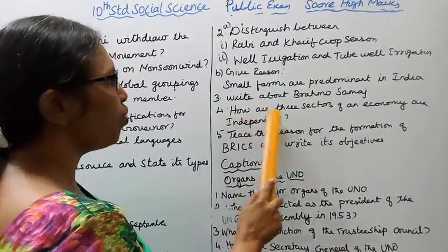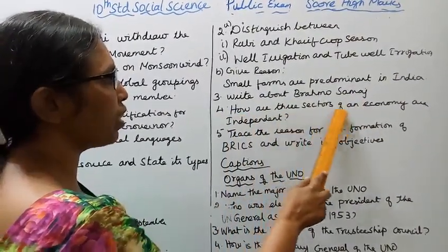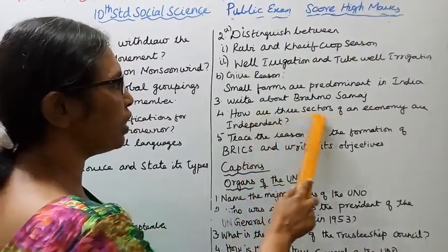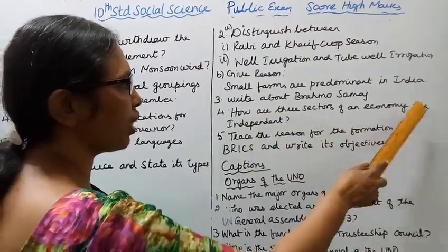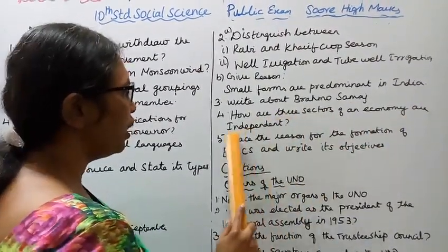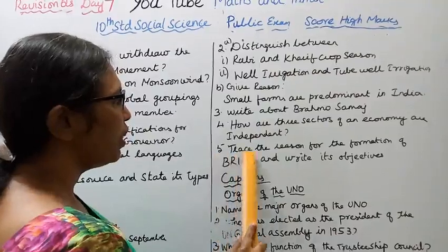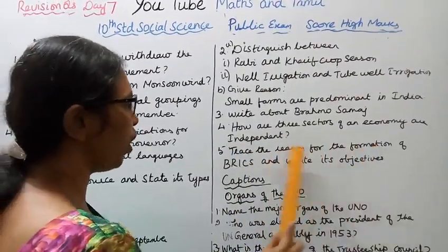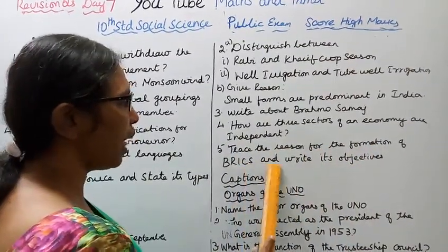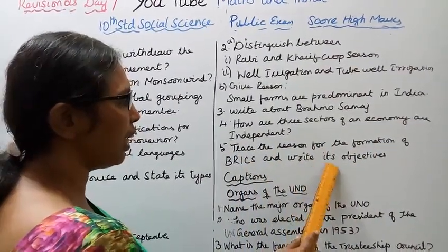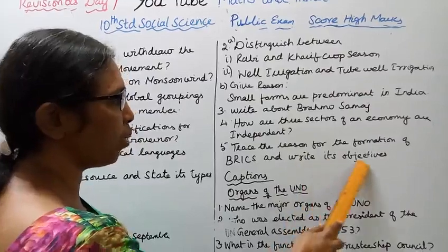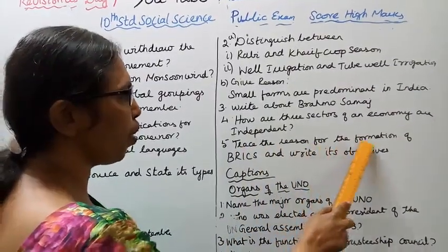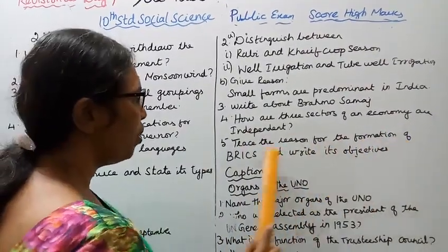Third: Write about Brahma Samaj. Fourth: How are the three sectors of an economy interdependent?